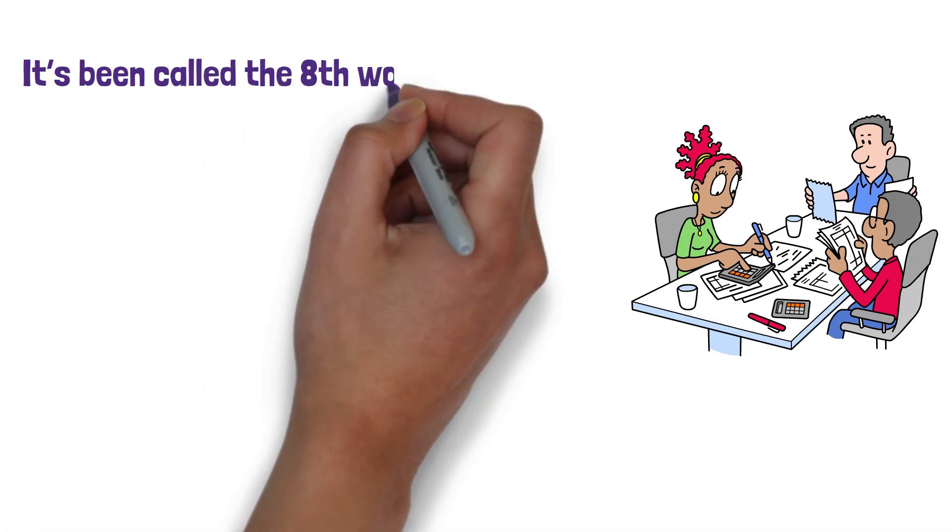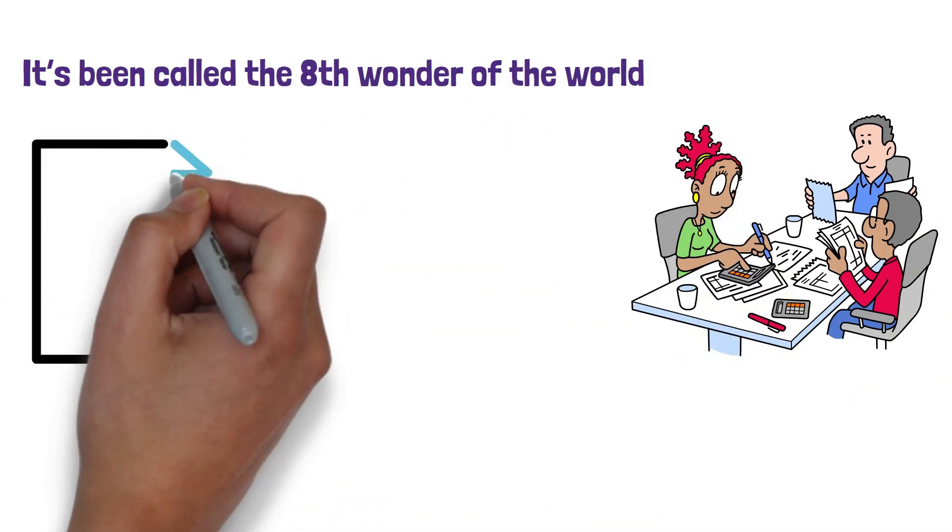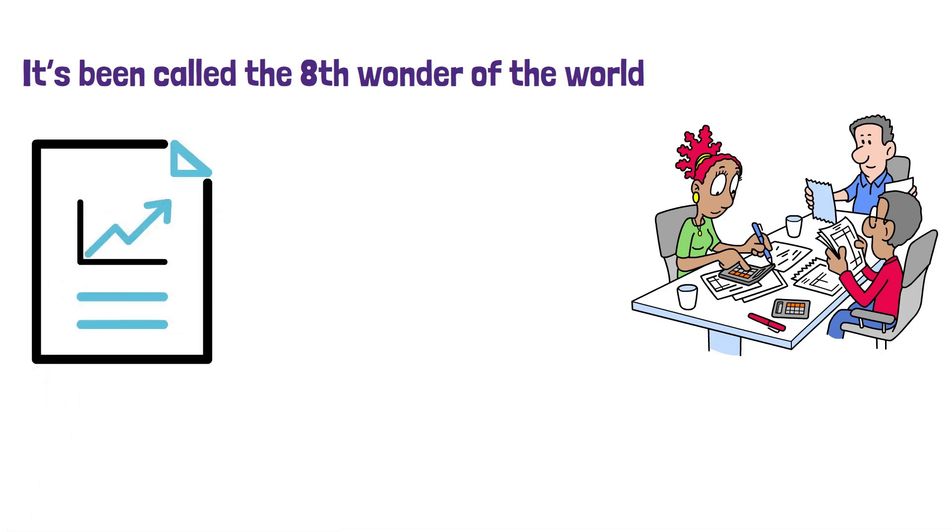It's been called the eighth wonder of the world, but what really matters is that compounding is exponential, not linear. It doesn't grow at a steady pace every year. It snowballs. Slow at first, then violently fast.